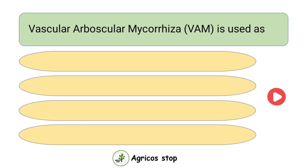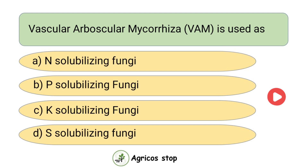Vesicular Arbuscular Mycorrhiza (VAM) is used as — options are Nitrogen Solubilizing Fungi, Phosphorus Solubilizing Fungi, Potassium Solubilizing Fungi, and Sulphur Solubilizing Fungi. The answer is Phosphorus Solubilizing Fungi. VAM is used as Phosphorus Solubilizing Fungi.